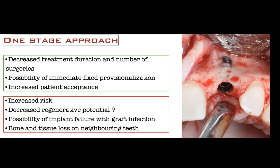Disadvantages of single-stage: there's increased risk — no question. You're doing too many things at the same time. It can be challenging getting the implant in a correct restoratively-driven position while simultaneously grafting around it. There's also decreased regenerative potential — it's much harder to grow bone over a titanium surface compared to a bone surface that provides blood supply. And if you have a graft infection with the implant in place, you face a much bigger complication: possible implant loss and potentially disastrous bone and tissue loss on neighboring teeth.